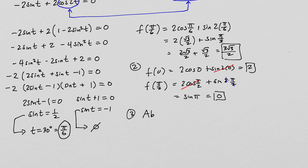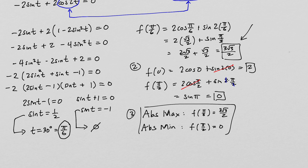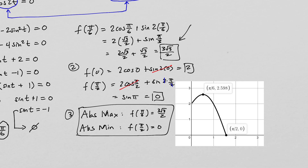Now step three: identify the absolute maximum and minimum by comparing the three values. Clearly 0 is the smallest, so the absolute minimum occurs at f of pi over 2 equals 0. The absolute maximum is f of pi over 6 equals 3 radical 3 over 2, which is approximately 2.598 and is larger than 2. Here is a graph for visual confirmation showing the minimum and maximum on the interval from 0 to pi over 2.